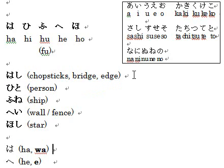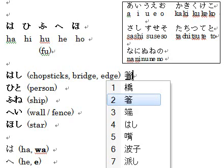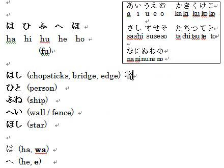To type はし, you type H-A-S-H-I. It could also be S-I for し. Then confirm with enter. For chopsticks, the kanji is this one. And for bridge, はし uses this kanji.